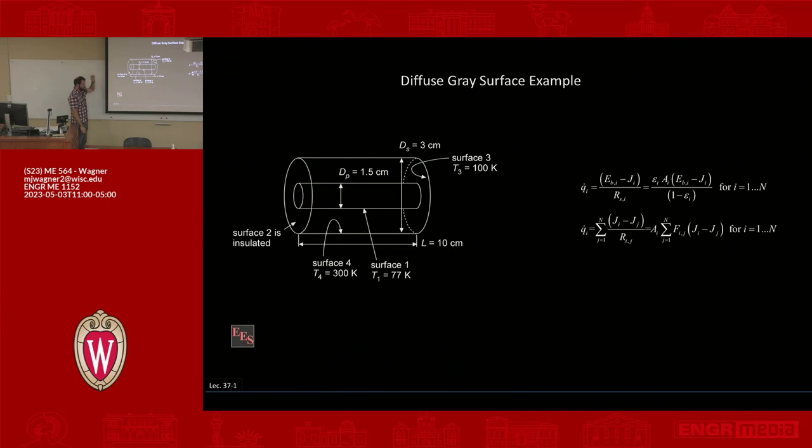Right away we know it's going to be kind of tough to draw a network and do it that way. So we're just going to use our equations that we've developed. We have boundary conditions for each surface, so specified temperature 1, 2, 3.